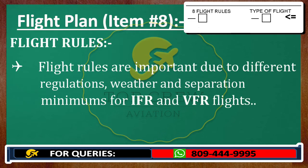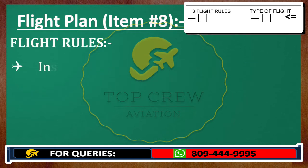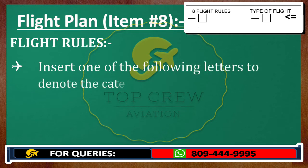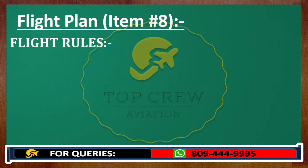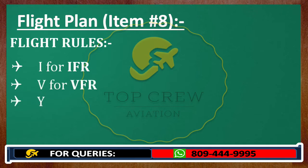We have to insert one of the following letters to denote the category of flight rules which the pilot intends to comply with. Options are: India for IFR, Victor for VFR, Yankee for IFR first then VFR.